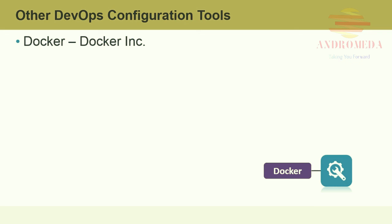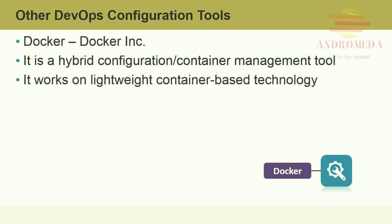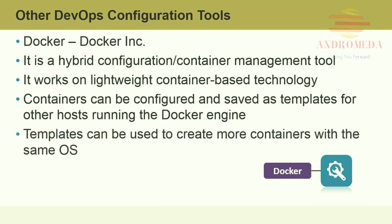Docker from Docker Incorporated really falls under its own category — it does not use Linux container technology and does not consider itself platform-as-a-service. It's a hybrid configuration container management tool. Although not a direct alternative to Chef, it works on lightweight container-based technology. Docker self-contains your application into containers — containers can be configured and saved as templates for other hosts running the Docker engine, and those templates can then be used to create more containers within the same OS.